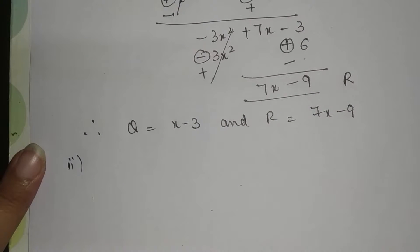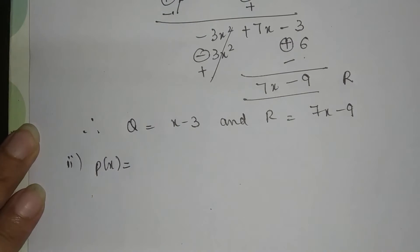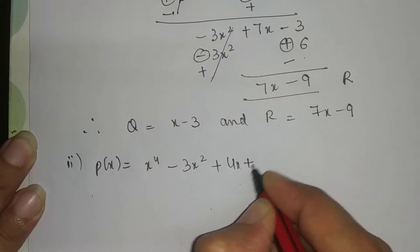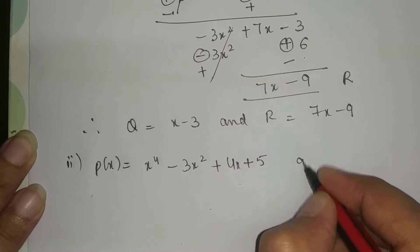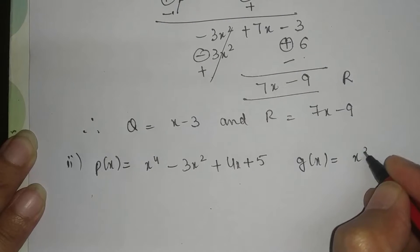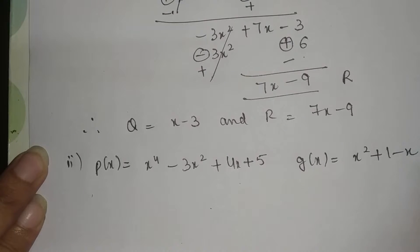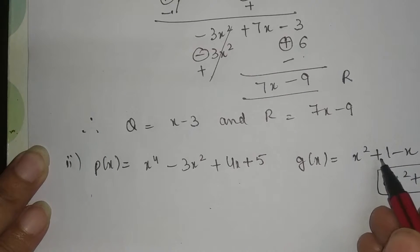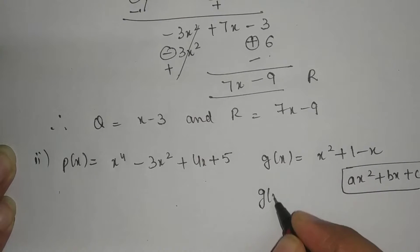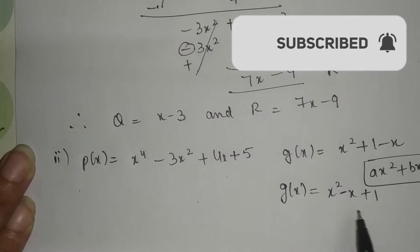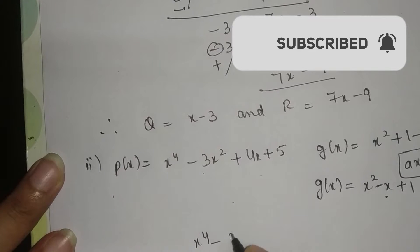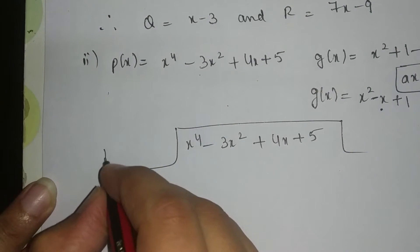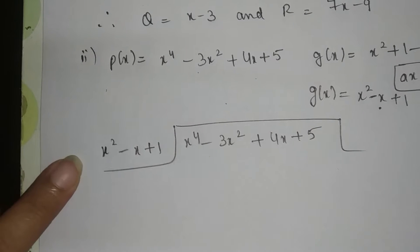Let's start our next part. In this statement, the value of Px given is x raised to power 4 minus 3x squared plus 4x plus 5, and the value of Gx given is x squared plus 1 minus x. Just as we write a polynomial in the form ax squared plus bx plus c for quadratic polynomials, I will rewrite Gx in standard form: Gx = x squared minus x plus 1. With this Gx, I will divide. We write x⁴ minus 3x² plus 4x plus 5 in division form with x squared minus x plus 1.